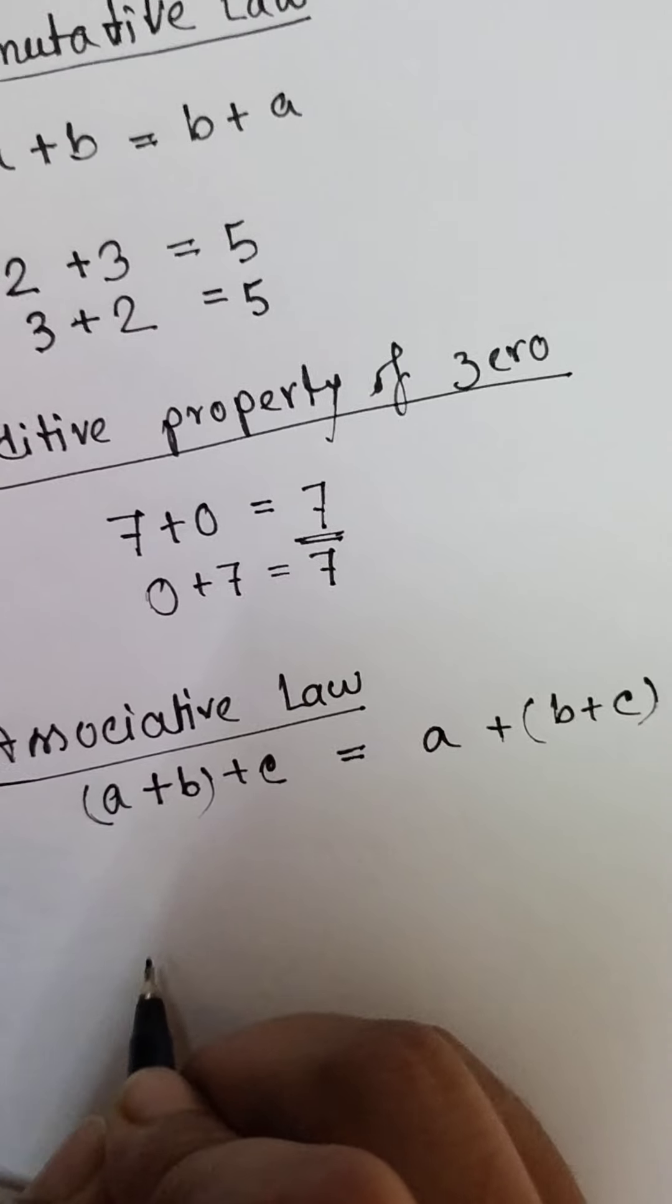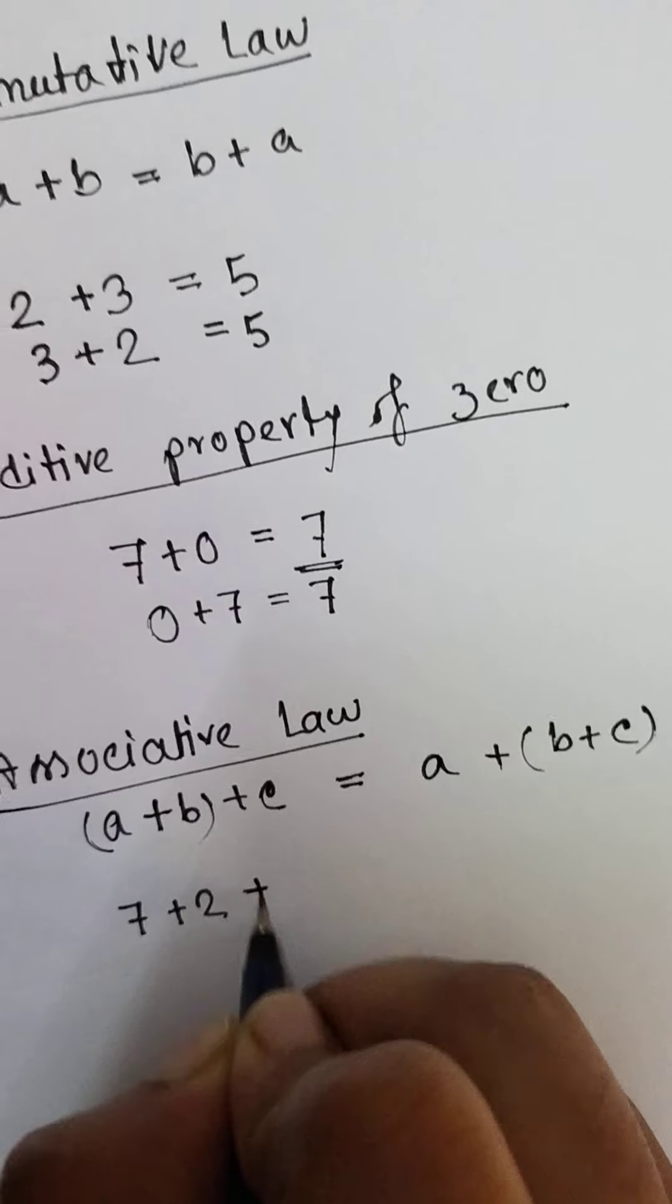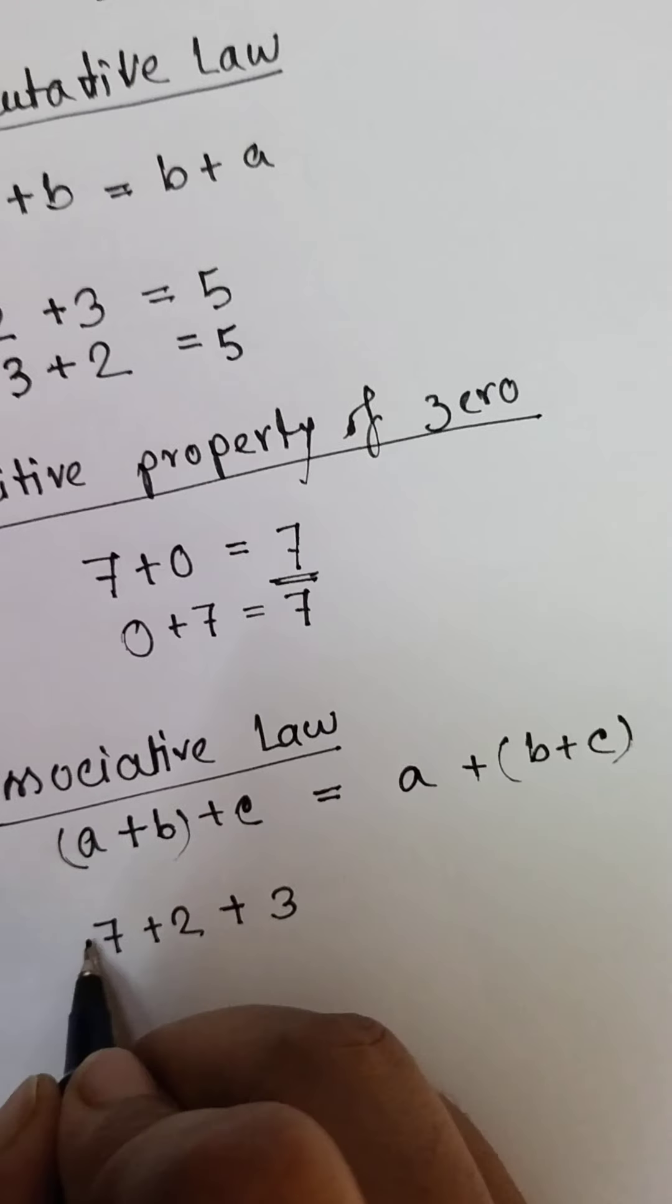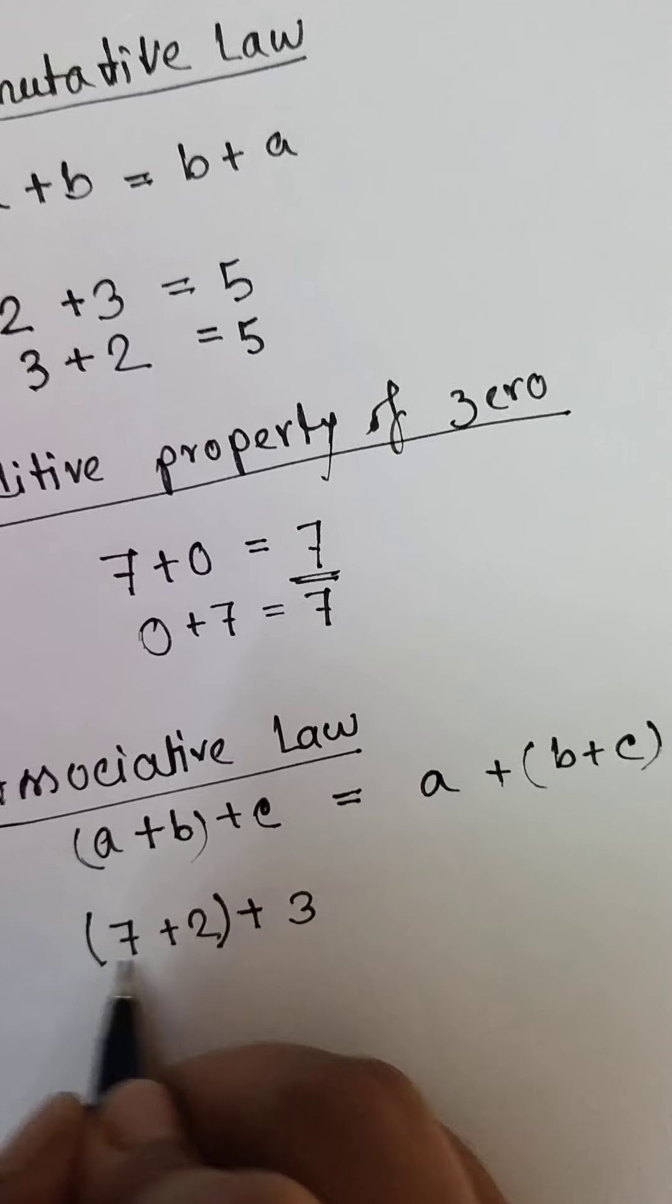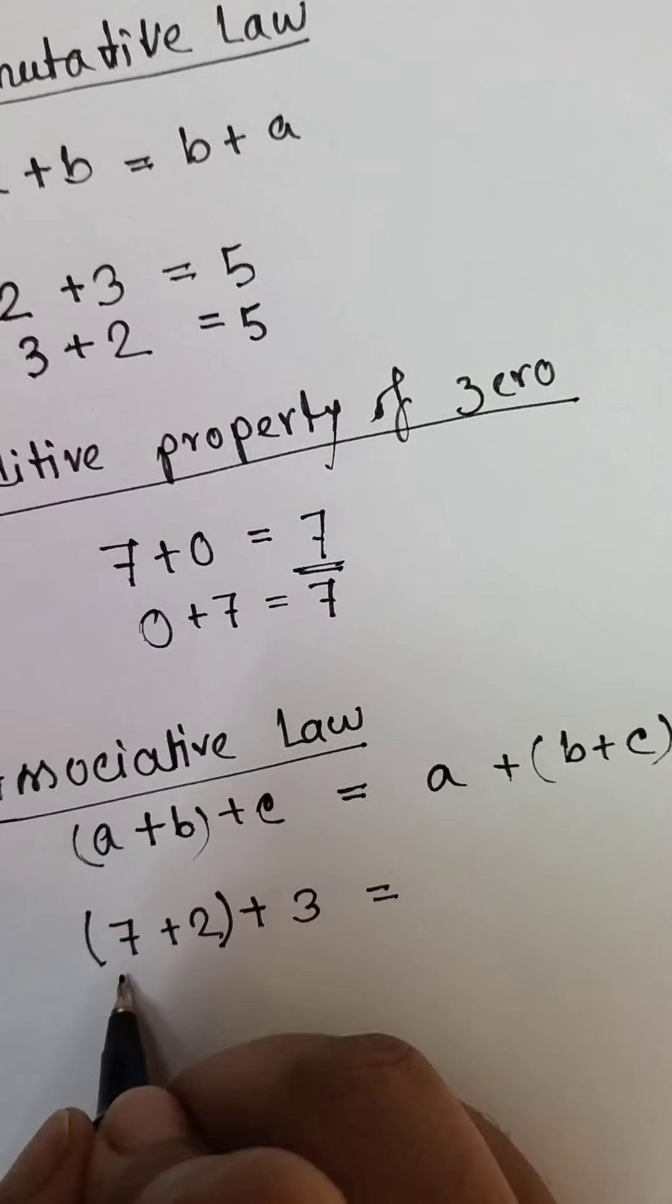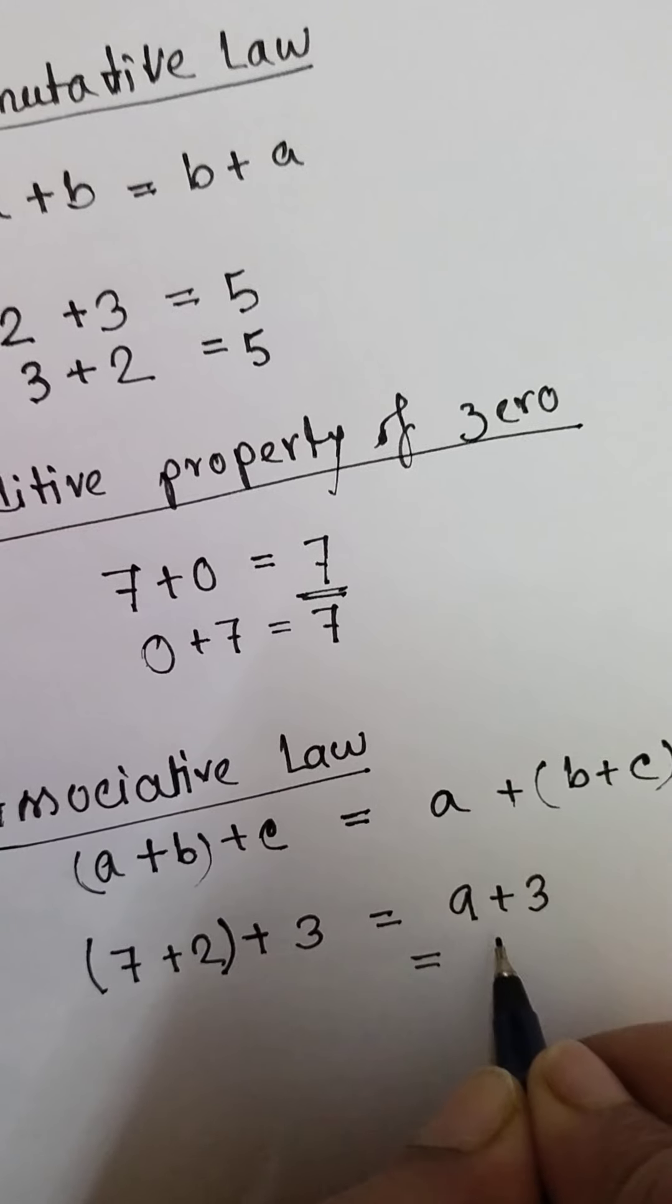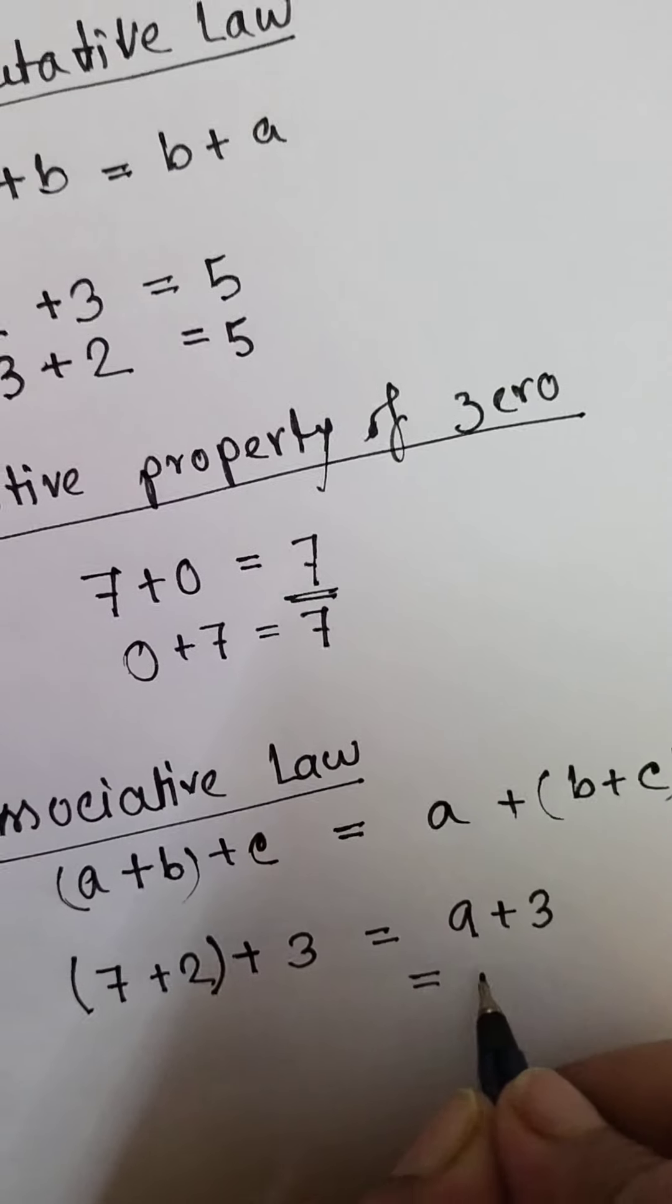Suppose 7 plus 2 plus 3. If we put bracket like that, we will get 7 plus 2, 9 plus 3, that is equal to 12.